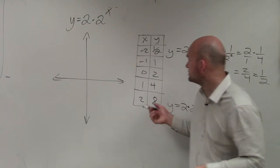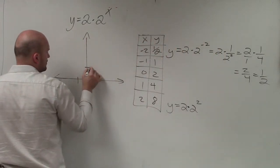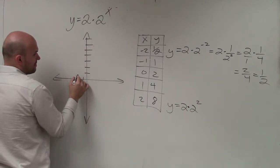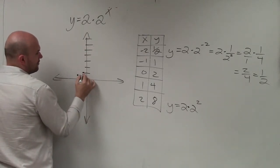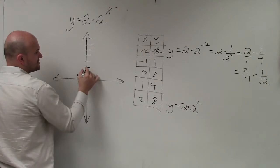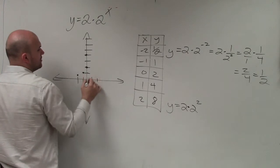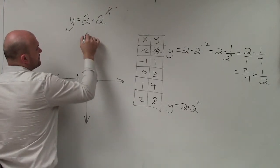So now let's go and plot the points here. So I have negative 2, so at negative 2 I'm at 1 half. At negative 1 I'm at 1. At 0 I'm at 2. At 1 I'm at 4. And at 2 I'm at 8.